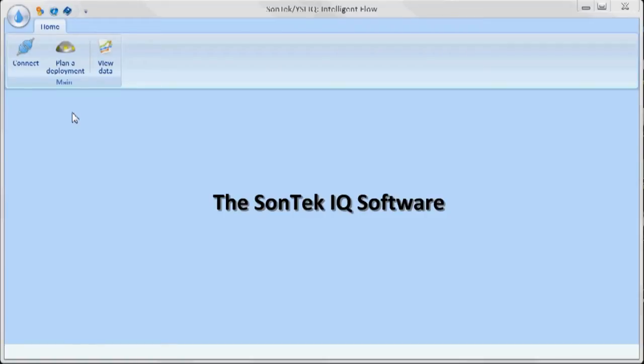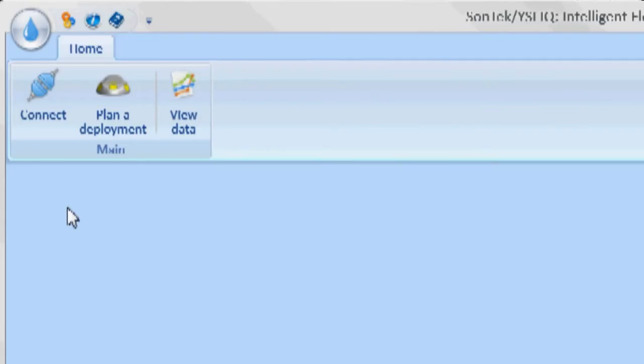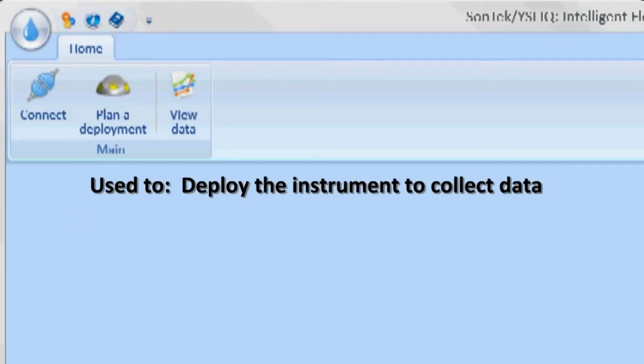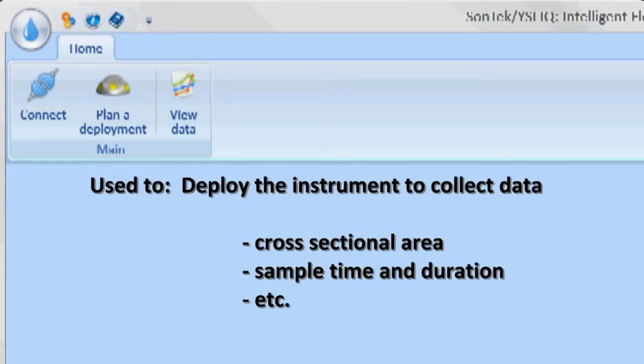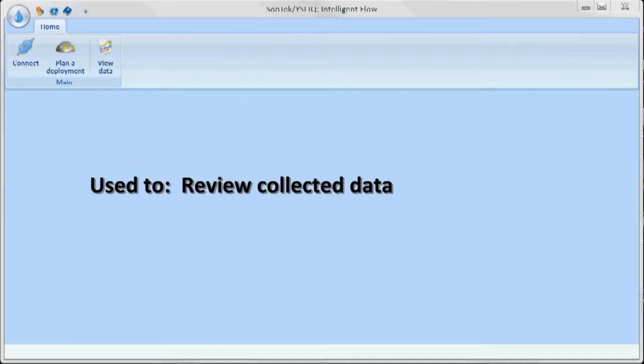What we have on the screen here is the Sontek IQ software. This software comes with both the Sontek IQ Standard and the IQ Plus. With this software, we're going to actually use it to deploy the instrument to collect data. We're going to program in the cross-sectional area, plan the sample time and duration. We can use the software also to download the instrument and review the data that we've collected. So the first thing I'm going to do is connect to the instrument.